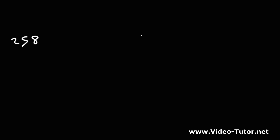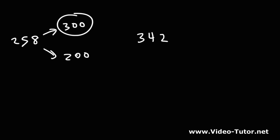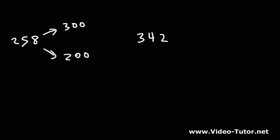Go ahead and try these two examples: 258 and 342. Round these numbers to the nearest hundred. For 258, should we round it up to 300 or should we round it down to 200? We need to look at the digit in the tens place. Five is part of the five or more group, so we need to round 258 up to 300.